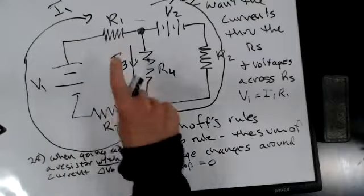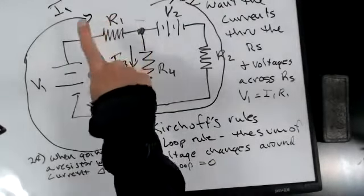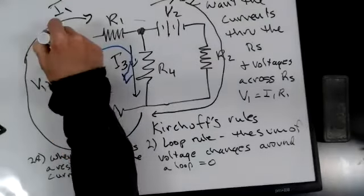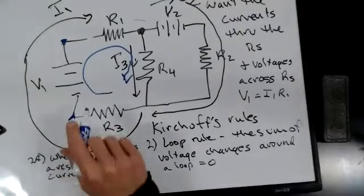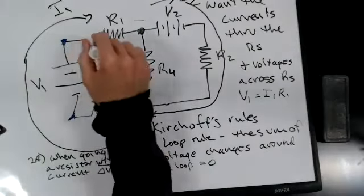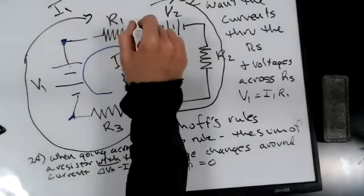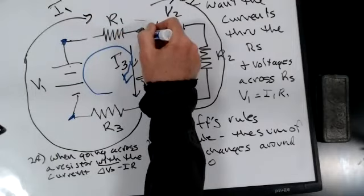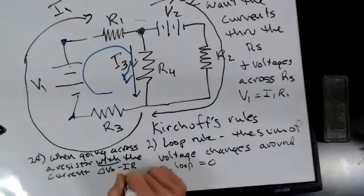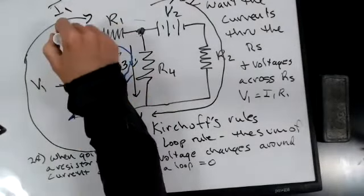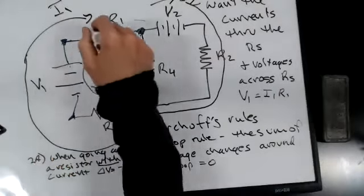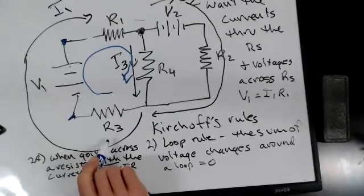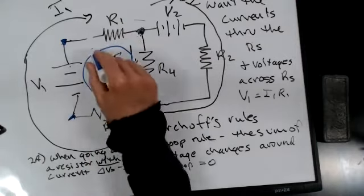When going across a resistor, there's a voltage change. If I pick this loop and start here, I get a voltage increase because I'm going from the negative end to the positive end of the battery. When going from here to here, I get a change in voltage of minus IR, because this is the high-voltage end near the top of the battery and the current is going through the resistor losing voltage — that's what resistors do.